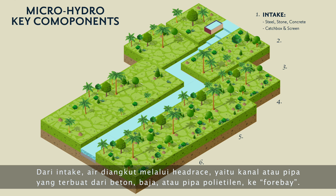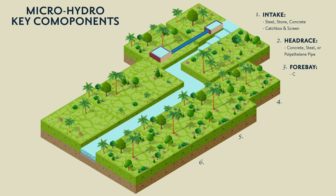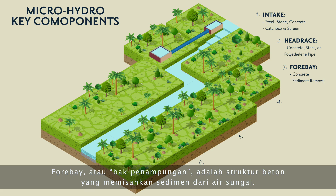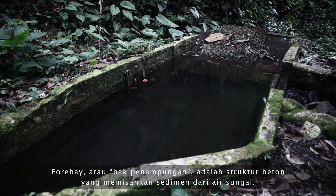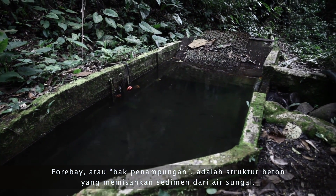From the intake, water is transported through the headrace, which is a canal or pipeline made from concrete, steel, or polyethylene pipe, into the forebay. The forebay, or sedimentation tank, is typically a concrete structure that separates sediment from the water.